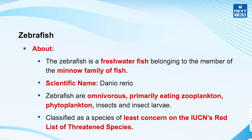Zebrafish is a small freshwater fish belonging to the minnow family. Its scientific name is Danio rerio and it is omnivorous, primarily eating zooplankton, phytoplankton, insects and insect larvae. It is classified as a Least Concern species by the International Union for Conservation of Nature.